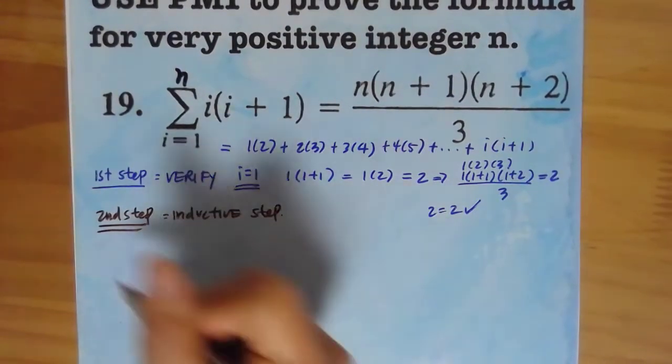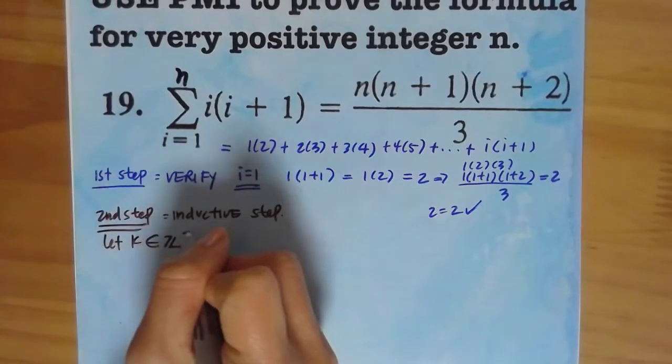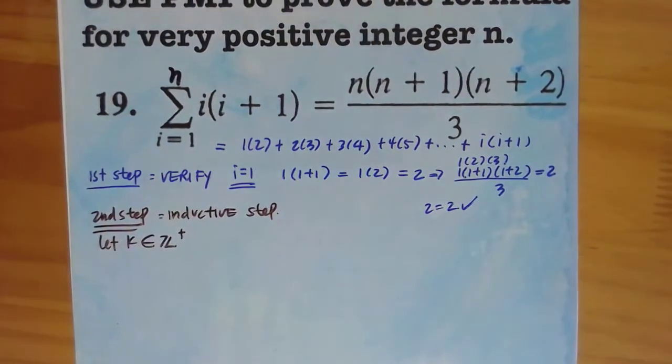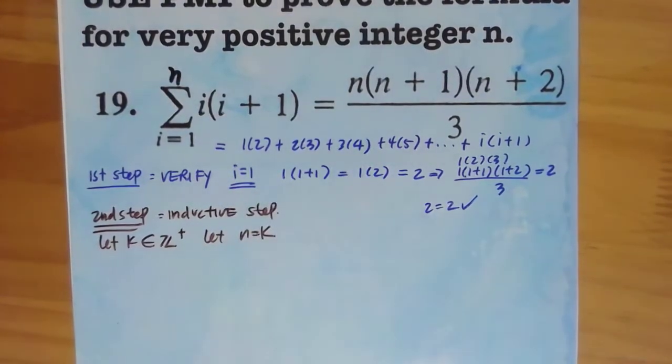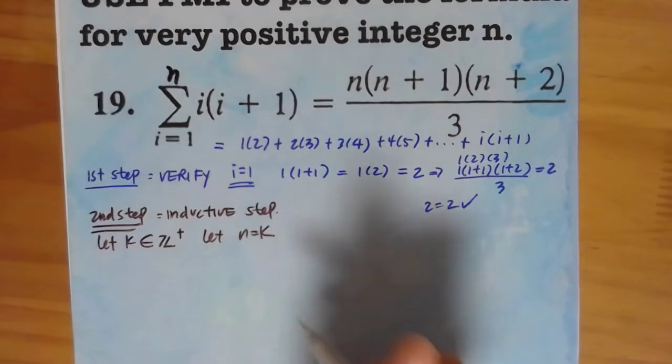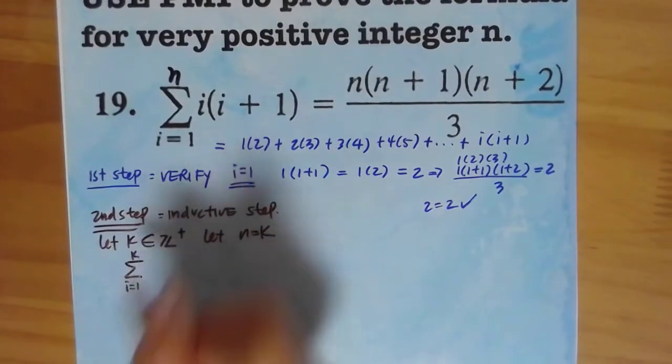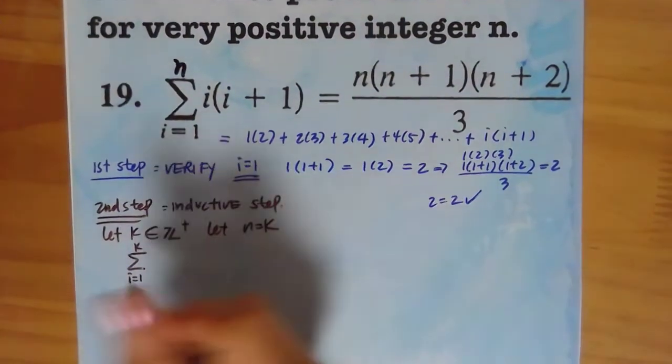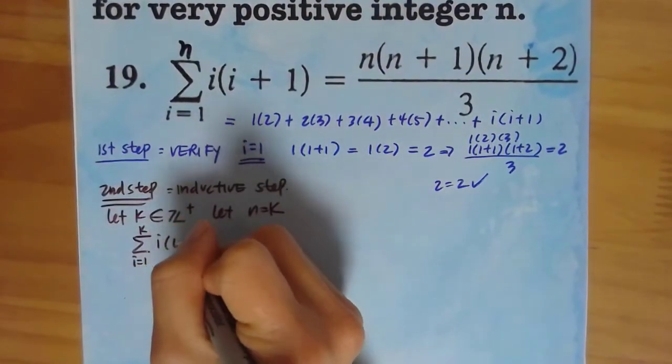What do we do here? We're going to let k be any positive integer. And let's let n equals k. That means what do we have here? i equals 1 all the way to k. Look at the notation here.